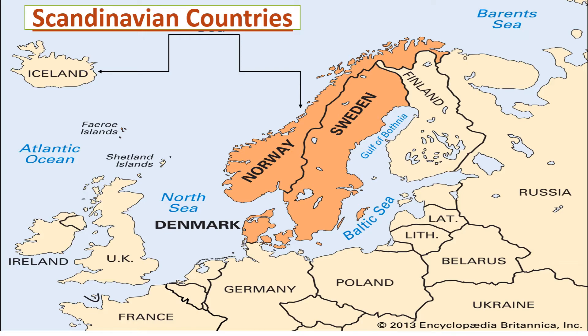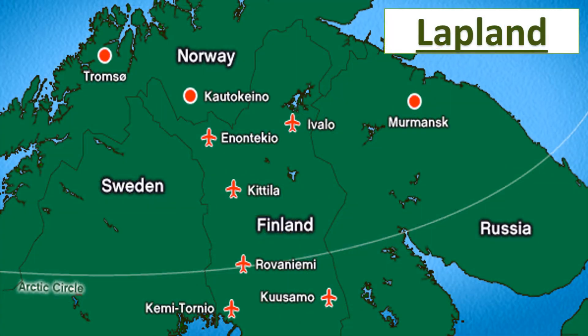The next region is Lapland. Lapland includes the region that lies to the north of the Arctic Circle. This includes the northern part of Norway, Sweden, the Kola Peninsula of Russia, and Finland. So these four parts — northern Norway, Sweden, the Kola Peninsula of Russia, and Finland — make up Lapland.